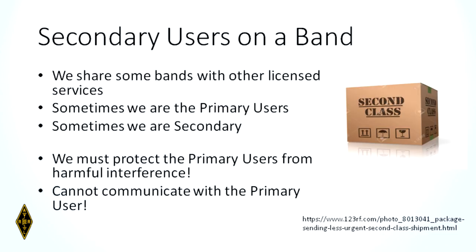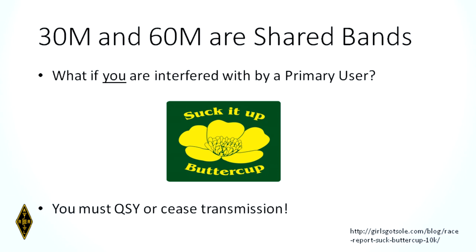Some amateur radio bands — like 60 meters and 30 meters — we are secondary users. We share the bands and we must protect the primary users, which may be military or commercial. We cannot communicate with the primary users. If you are interfered with by a primary user, you have to suck it up and QSY — change frequency. You may have to move off that frequency or even to a different band. Primary users have that right.